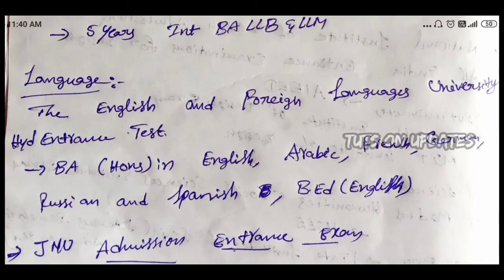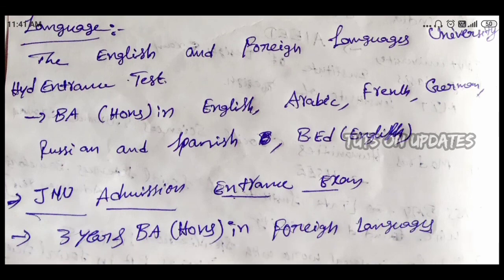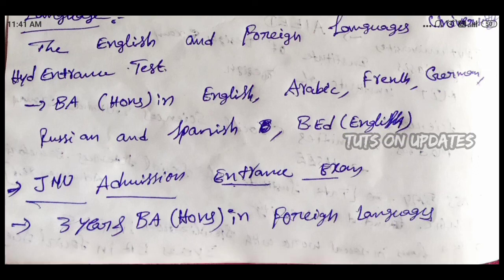Next is Honours in Languages. If you want to complete a bachelor's in foreign languages, please check these examinations. The first is the English and Foreign Languages University entrance examination, offering B.A. Honours in English, Arabic, French, German, Russian, and Spanish. Next is the JNU Admission Entrance Test — the Jawaharlal Nehru University entrance exam for B.A. Honours in Foreign Languages.